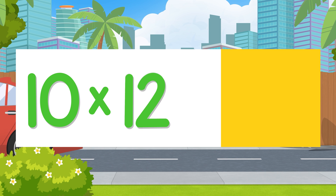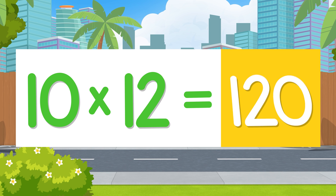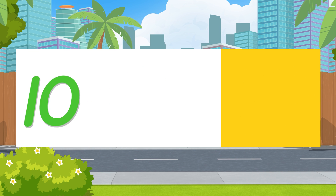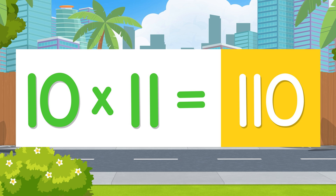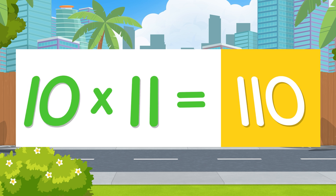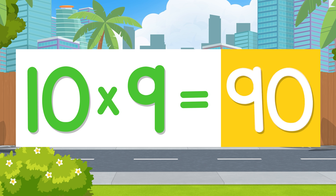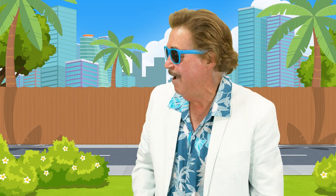Ten times twelve is 120. Ten times eleven is 110. Ten times nine is 90. To multiply by ten, you take the number then, add a zero to the end — that's the end.